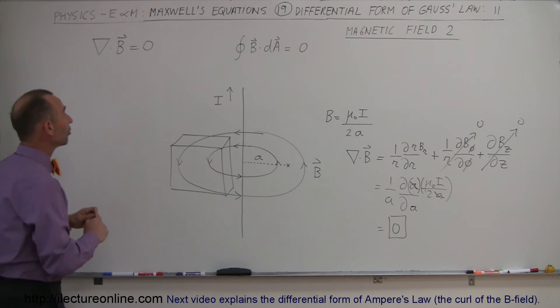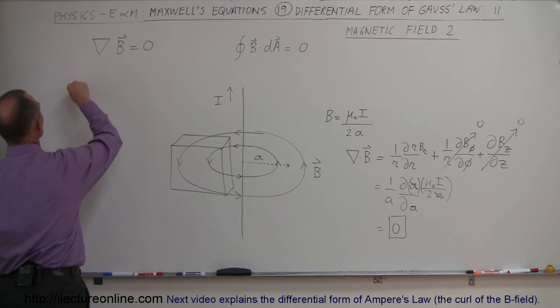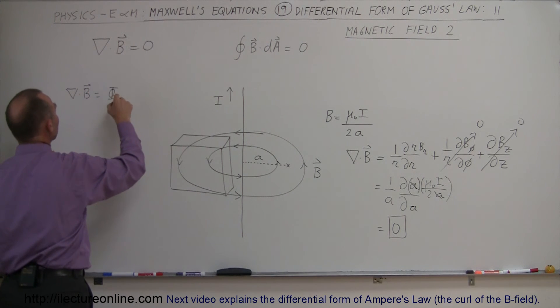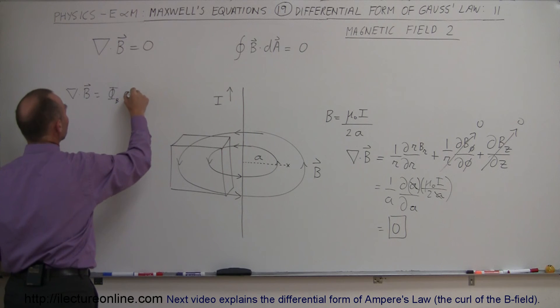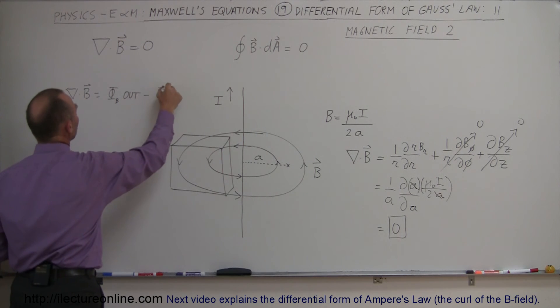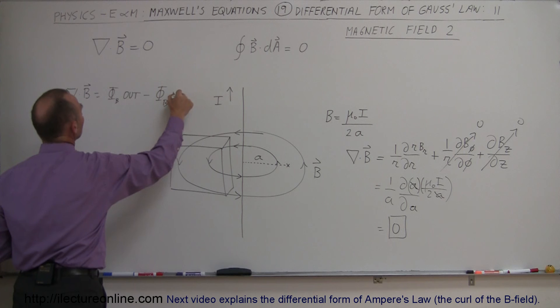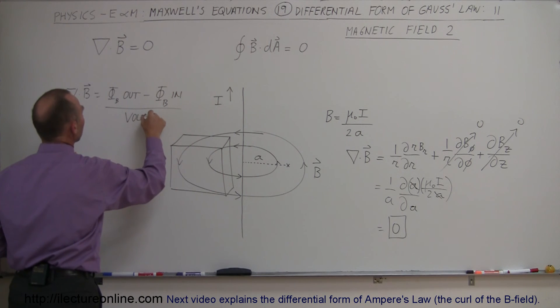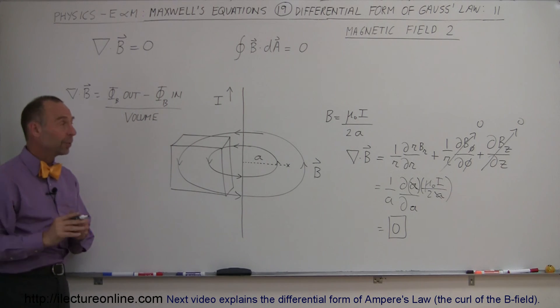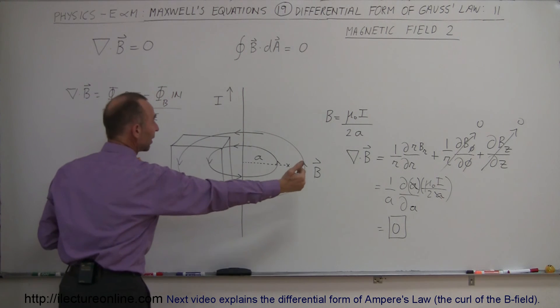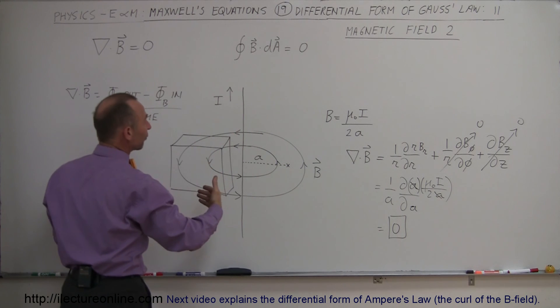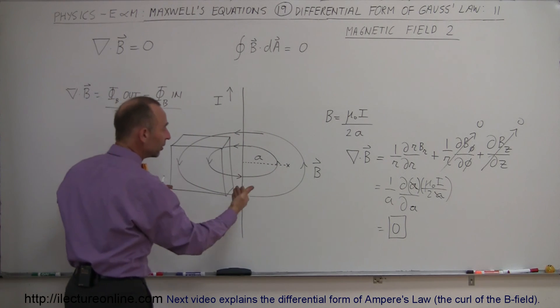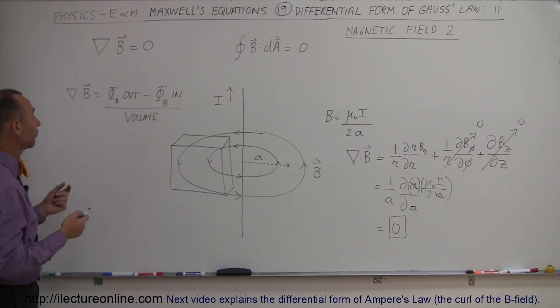Another way of looking at the divergence, you could say that the divergence of B is equal to the magnetic flux coming out of the cube minus the magnetic flux going into the cube divided by the volume of the cube. So in the same way we can say that the same amount of flux comes into the cube as leaves the cube and therefore the net flux in the cube is zero. Therefore the divergence of the B field, the divergence of the magnetic field also equals zero.